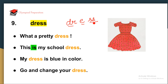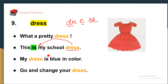Let us see how to use the word dress in sentences. 'What a pretty dress.' 'This is my school dress' — we are talking about a single object, so we use 'is.' 'My dress is blue in color' — again, because we are talking about a single thing. 'Go and change your dress.' The hissing sound means double S — dress.